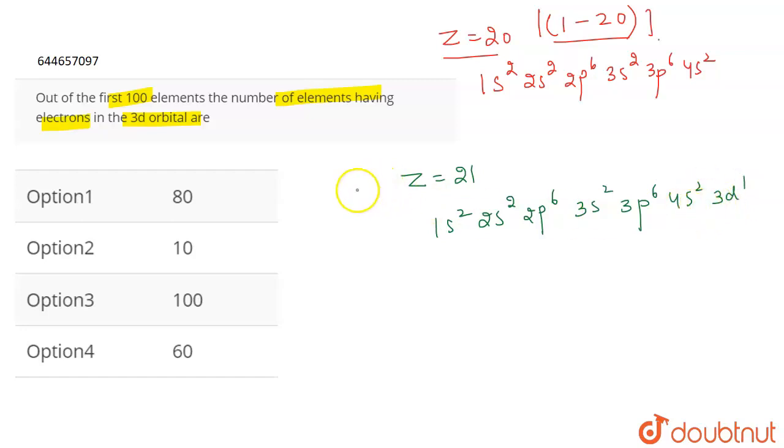This means that from atomic number 21, the filling of D orbitals has started taking place. Up till 20, there was no filling of D orbitals, but from atomic number 21, the filling of D orbitals has started.